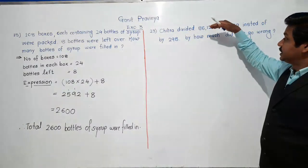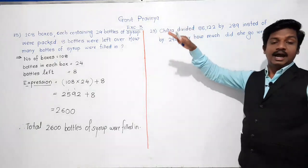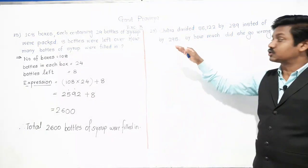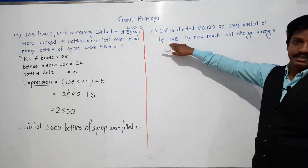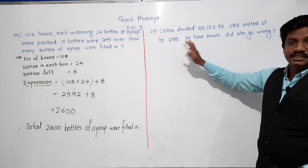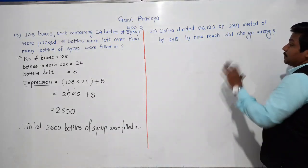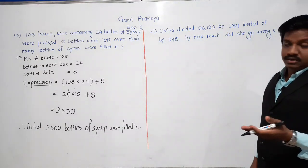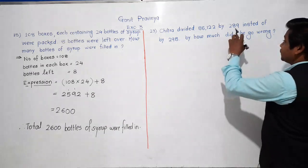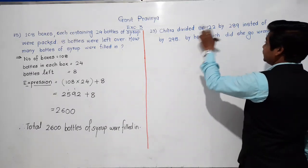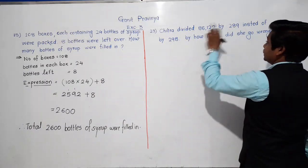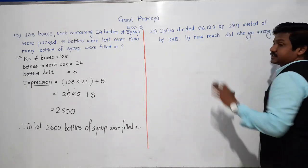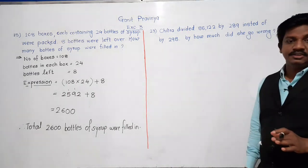They are not asking how much the quotient differs, or what the quotient would have been. Just we have to find the difference between the divisors — the true divisor and the wrong divisor, the correct divisor and the wrong divisor.